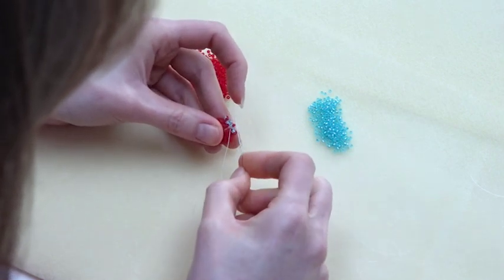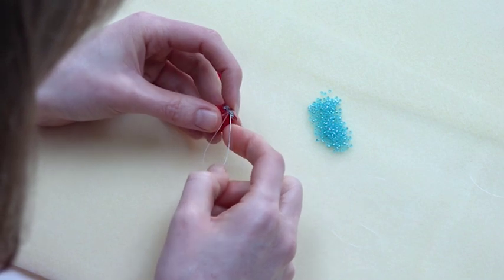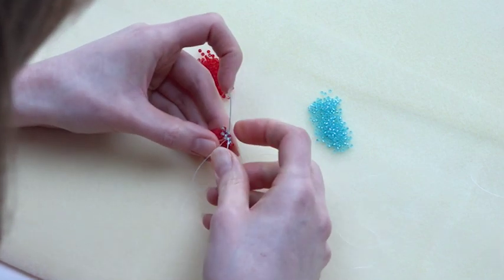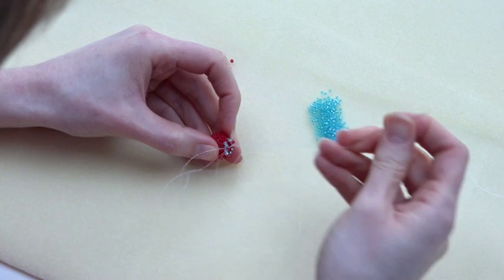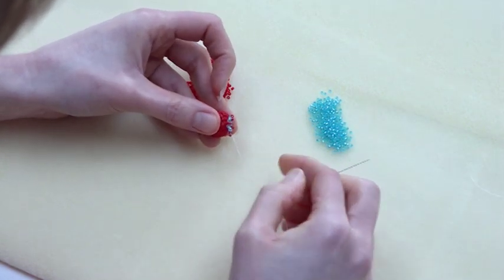Now the step up is just about getting ready to start the next row. So in this case, we're going to go through the beads in the first loop, and exit from the middle bead. So that was bead number two, and now you can see why I've been using a contrast colour.